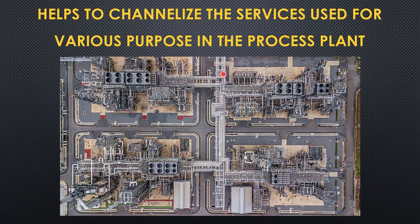The pipe rack is constructed to give equal distribution to all areas of the plant. For example, if an equipment needs a cable tray, it could be laid over this rack, and if equipment needs piping, it could also be laid over this rack. Pipe rack is a very vital part — it's more or less like the backbone of the process plant. It helps to channelize the services used for various purposes in the plant.